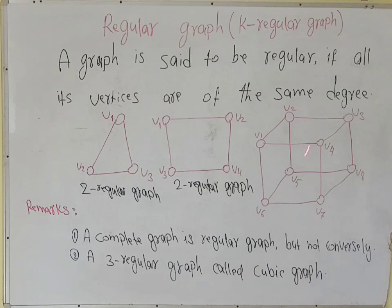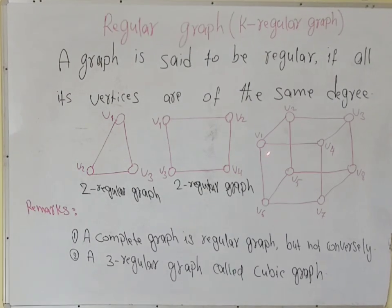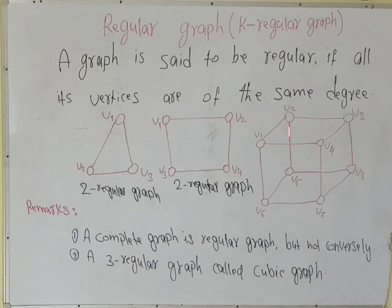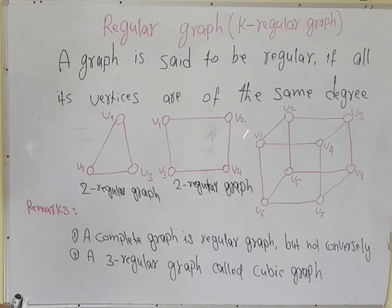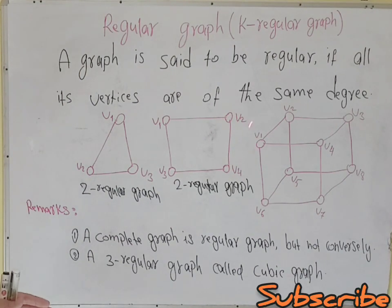Graph number three is also a two-regular graph, because every vertex of this graph has three degree.